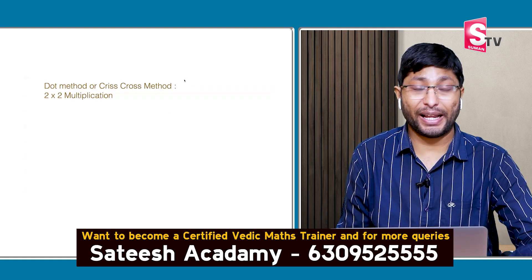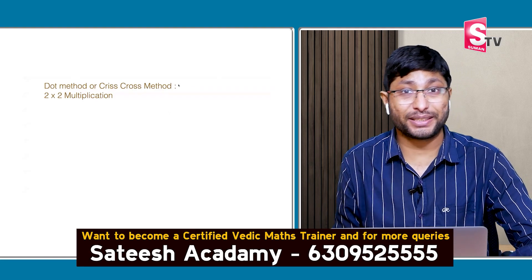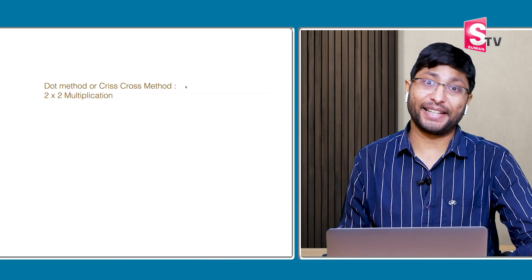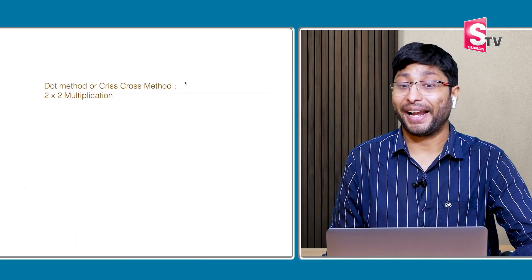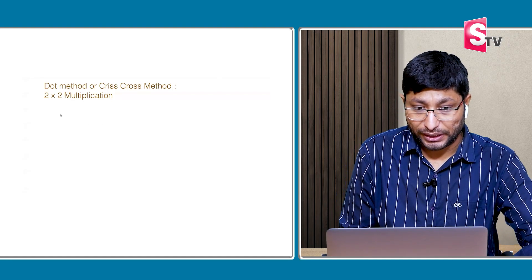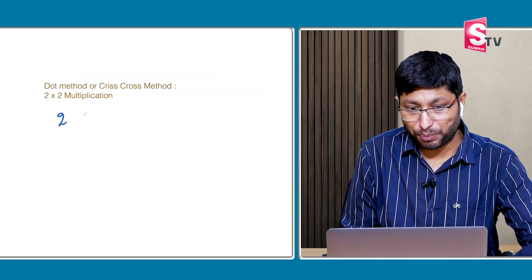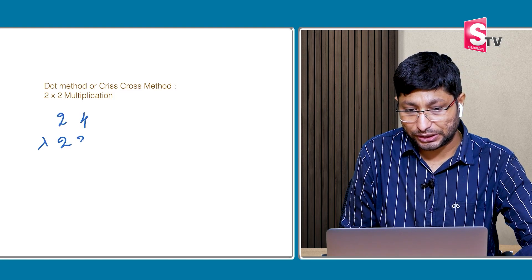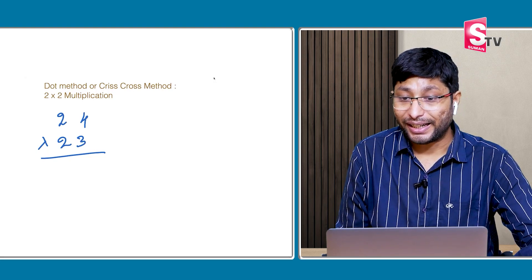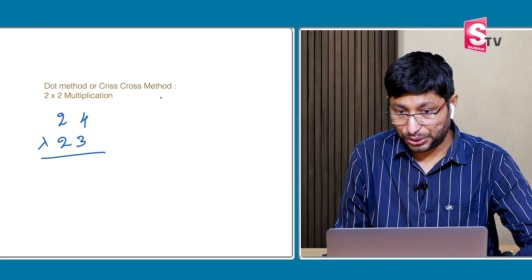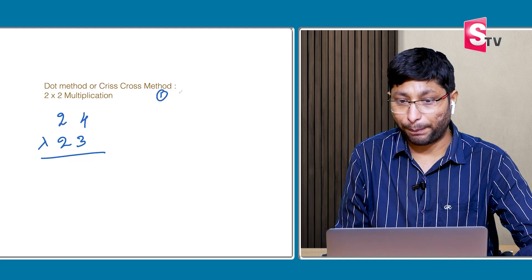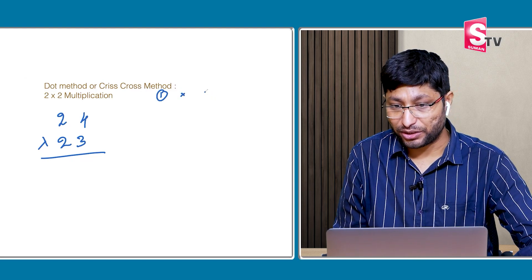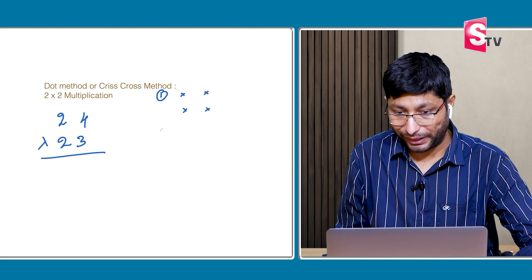This dot method will help you to solve any two-digit number multiplied by any two-digit number, or any two-digit number multiplied by any one-digit number. I'll start explaining with small numbers: 24 × 23. There are three steps in this dot method.